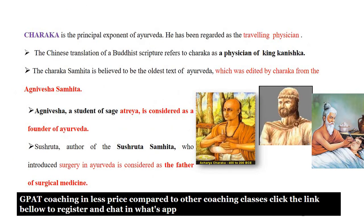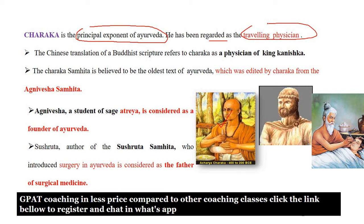Charaka is the principal exponent of Ayurveda — the person who introduced and developed this system. He has been regarded as a traveling physician who traveled from one area to another. In the Chinese translation of a Buddhist scripture, it is mentioned that Charaka was a physician of King Kanishka, working as a doctor in his kingdom.